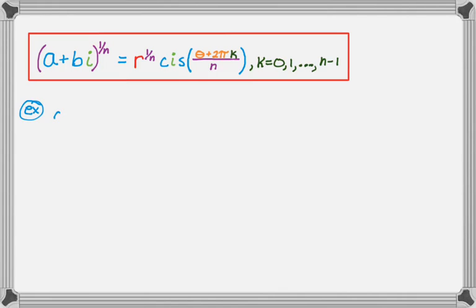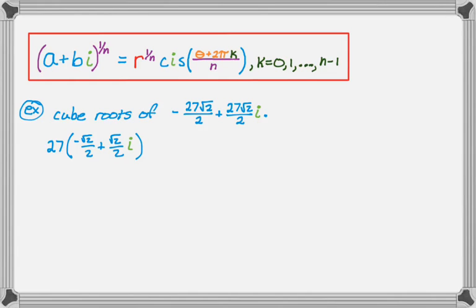And then maybe I'll make another video where I do a couple more. So the example we're going to do is find the cube roots of negative 27 root 2 over 2 plus 27 root 2 over 2 i. Everyone does these in an informal way. So what I'm going to do is factor out the 27. And realize that what I really have here is the unit circle point negative root 2 over 2 comma root 2 over 2, which is an angle that I recognize. And then I'm going out 27 units. So it's on a circle with a radius of 27.